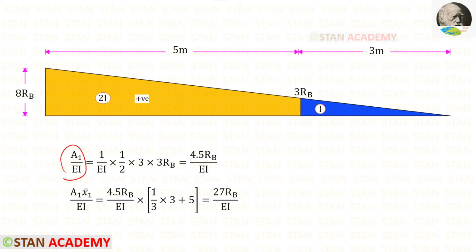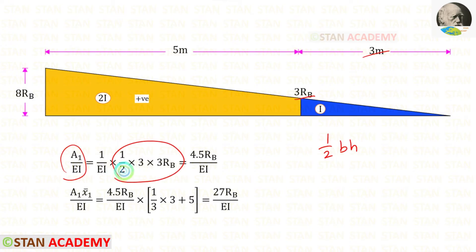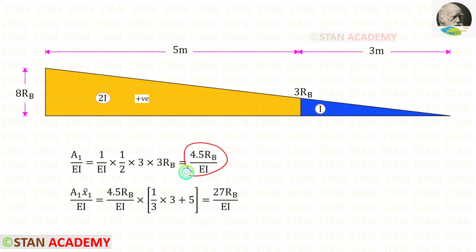We know the area formula of a triangle: half into base times height. Here the breadth is 3 and the height is 3Rb. So half into 3 into 3Rb — after calculation we get 4.5Rb upon EI.